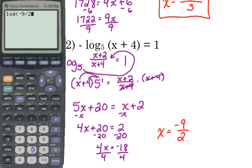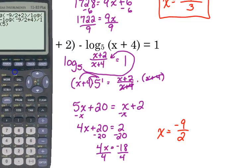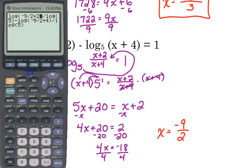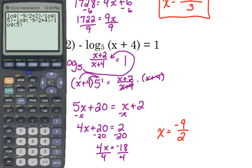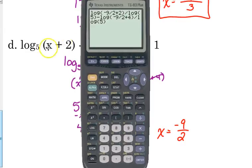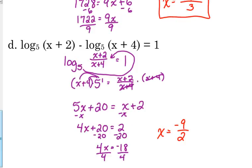We want to plug it in to make sure. Log of negative 9 over 2 plus 2 divided by the log of 5 minus the log of negative 9 over 2 plus 4 divided by the log of 5. That should give us 1. Whoops. And it doesn't. Because when we go to plug it back in, when we plug in negative 9 over 2, negative 9 over 2 plus 2 is still negative. We can't take the log of a negative number. So, even though we get an answer, when I go to check it, it says non-real answer. So, even though we get it, we've got to throw it out. This one actually has no solution. This one actually has no solution.